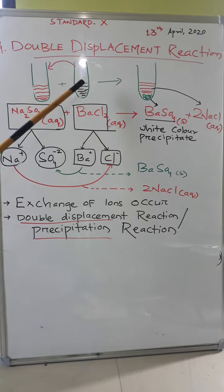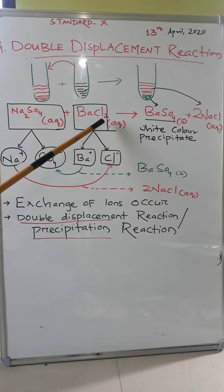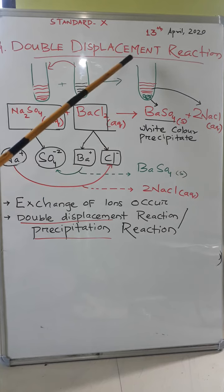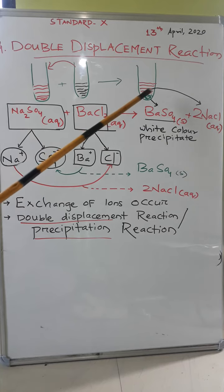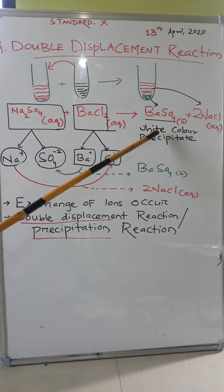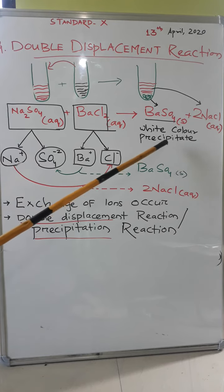In another test tube, we have taken the aqueous solution of barium chloride. When we mix these two solutions, we will find — as shown in this picture — there will be some white color precipitate. Precipitate means some insoluble substances which come to the bottom after the reaction.